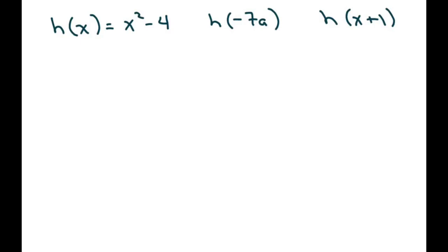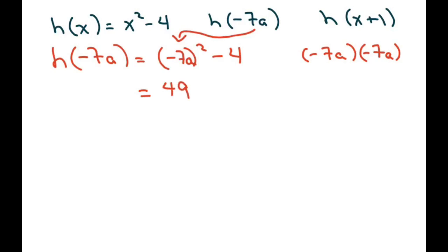On the last one, it's a little harder, so I'm going to do the same thing. I'm just going to write h of negative 7a equals, and I'm going to put parentheses where the x is, and then I'm going to substitute with negative 7a. So don't forget, this square just means we're multiplying this twice. You can just write it down twice. So when you do that, negative 7 times negative 7 is 49, and then a times a is a squared minus 4.